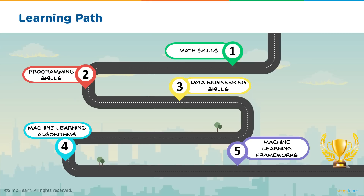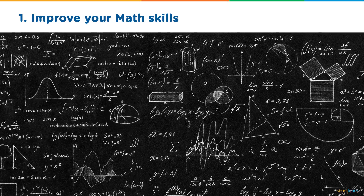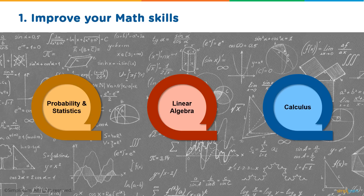Before you can start off on your journey to becoming a machine learning engineer, there are a certain number of steps you need to follow. Your first step is to improve your math skills. Mathematics plays a very important role in helping you understand how machine learning and its algorithms work. Among the many concepts you need to understand, three of the most important ones are probability and statistics, linear algebra, and calculus.